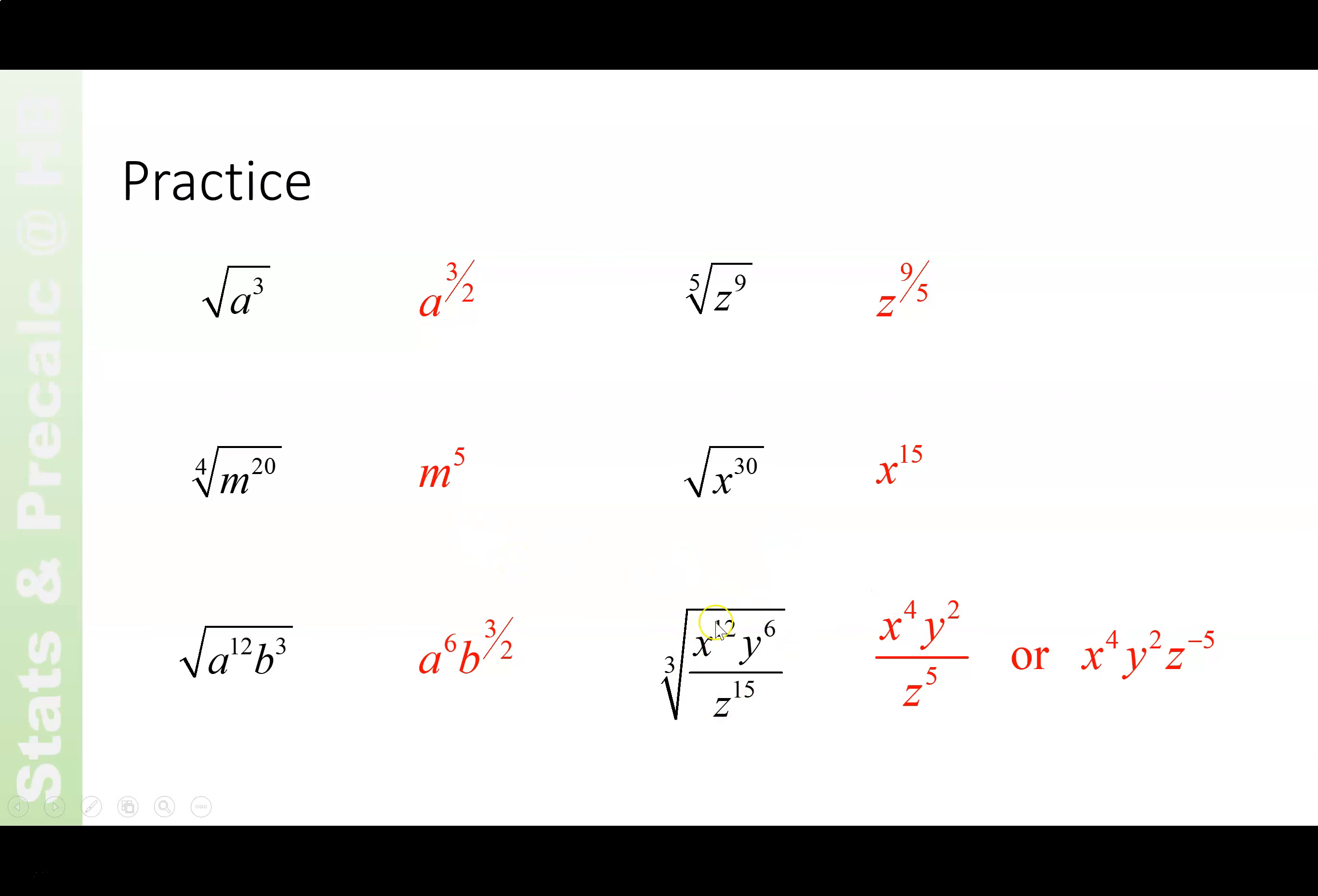Again, notice that this one down here, you have the cube root of x to the 12th, which would be x to the 4th, the cube root of y to the 6th. 6 over 3 is 2. The cube root of z to the 15th. The 15th power of the third root. 15 divided by 3 is 5. So you end up with these powers. You could also write this with z to the negative 5th because it's in the denominator. It's all there. It's all good.